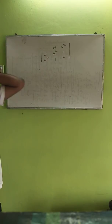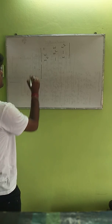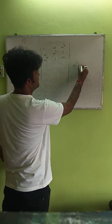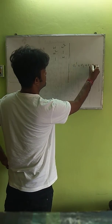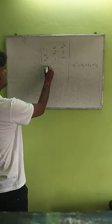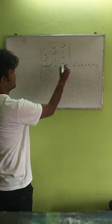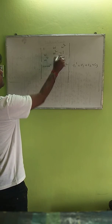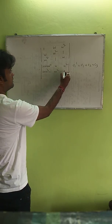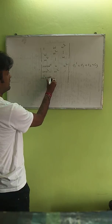Without expanding, find the value of the determinant. If we do the operation C1' = C1 + C2 + C3, what will happen? The first column becomes: 1 + ω + ω², ω + ω² + 1, ω² + 1 + ω.